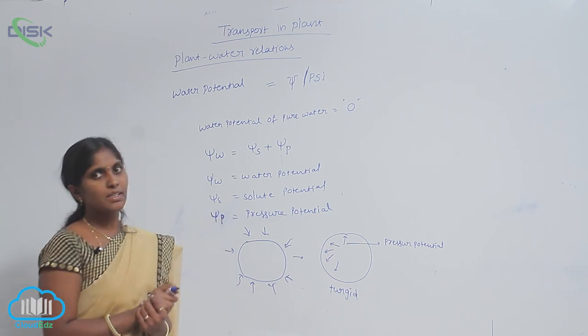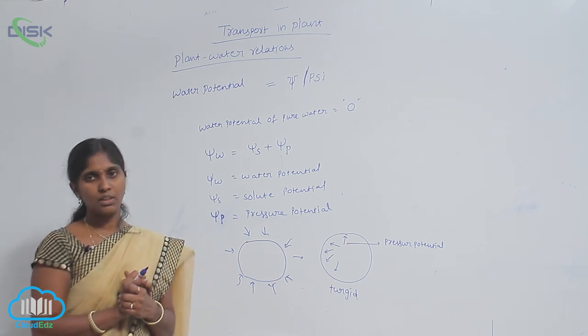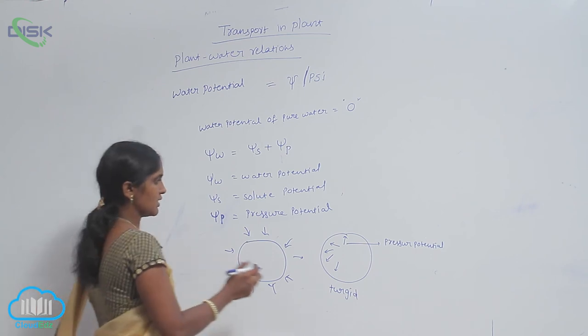In flaccid cells, what is a flaccid cell? The cell which lost the water, then it is shrunken inside. That is called a flaccid cell.